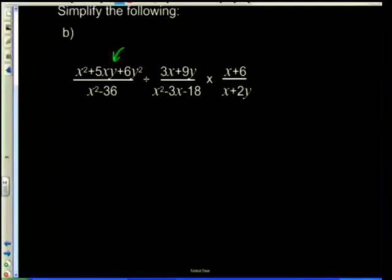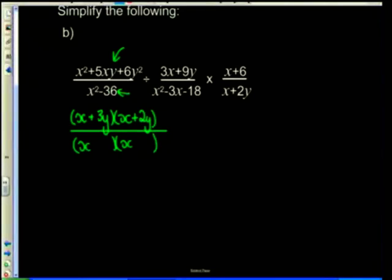How am I going to factorize this numerator? Well, that is a trinomial. As a trinomial factorized, I'm going to have an x and an x. My factors of 6, I'm going to have 3y and 2y, and both of them are going to be positive. That is then going to be over the denominator. I've got this one over here: x squared minus 36. That's a difference of two squares: x minus 6 times x plus 6.